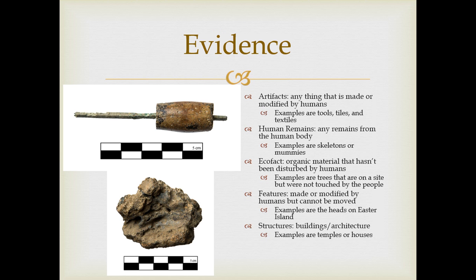So what are the different types of evidence? There are several categories. Artifacts are anything that is made or modified by humans — literally from the Latin ars artis, meaning skill, plus faccio facere, meaning to make or do. Examples include tools, tiles, and textiles. Here we have a couple of examples: a bronze pin and a crucible fragment.